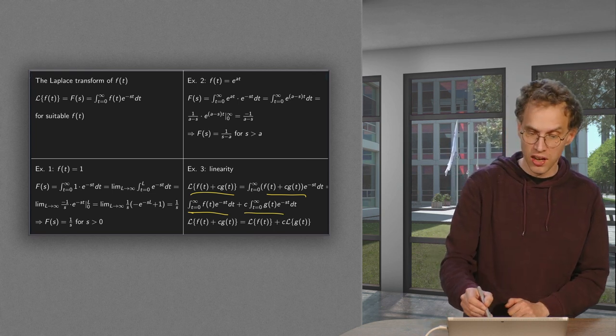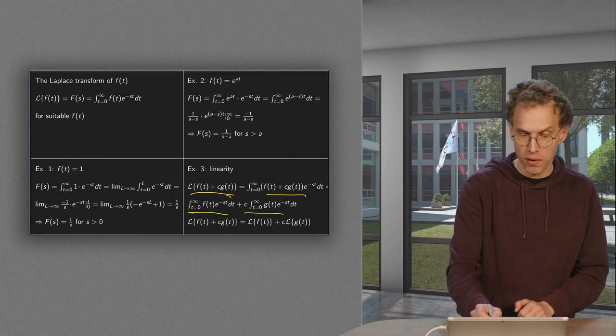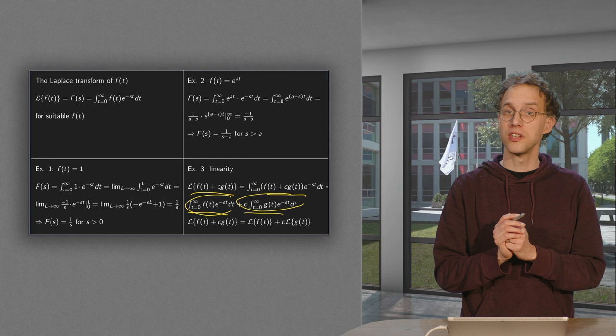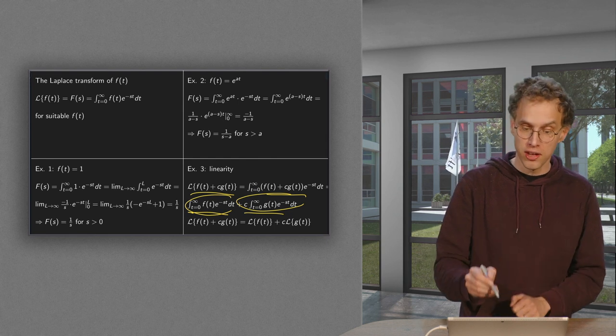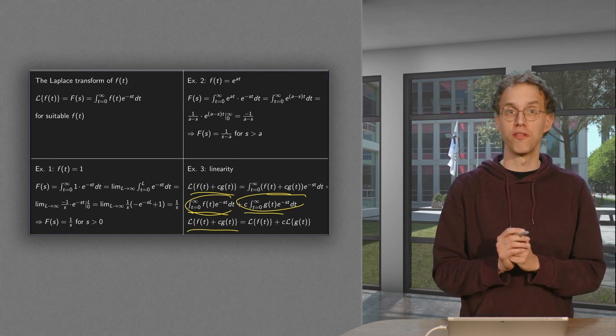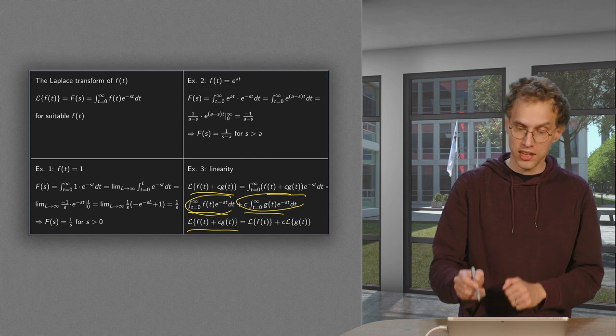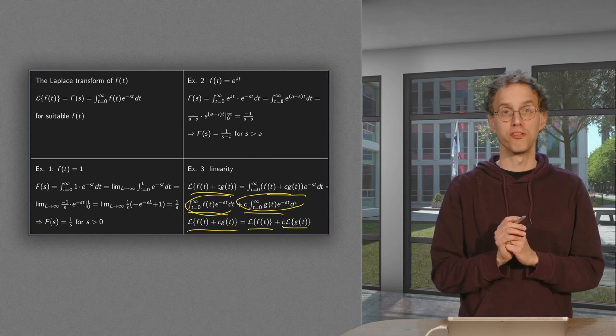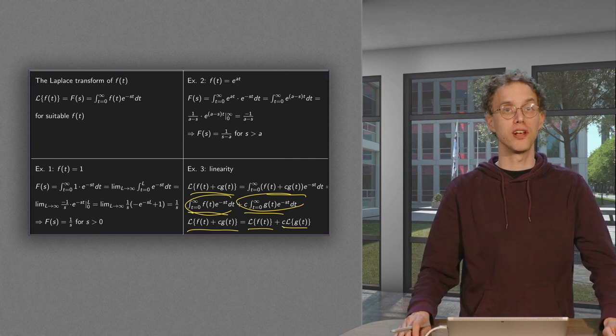And then what it reads is: this part is the Laplace transform of f, this part is c times the Laplace transform of g. So the Laplace transform of (f plus c times g) is the Laplace transform of f plus c times the Laplace transform of g, which is linearity of the Laplace transform.